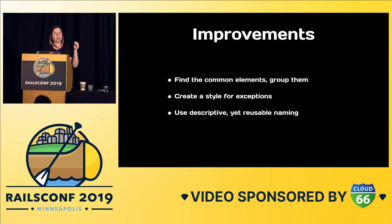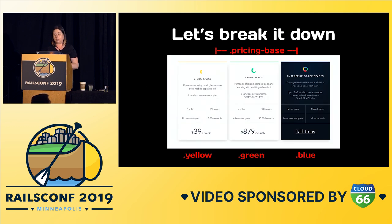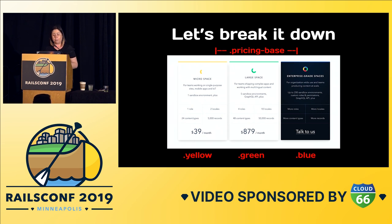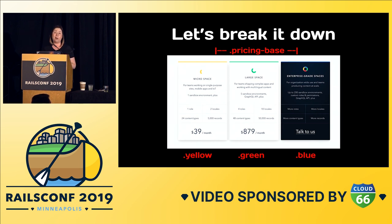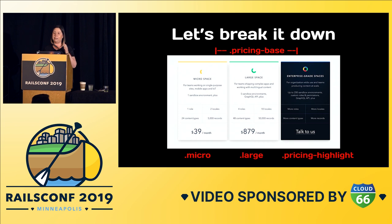How I would approach a pricing table like this is creating a pricing-base class that has all the elements boxes have in common — same width, height, border, border-radius, box-shadow. Then handle exceptions like yellow, green text, and blue background. I'd use something more semantic like 'micro,' 'large,' and 'highlight' rather than color names, because if marketing says that yellow isn't testing well and they want purple, you'd have a class called 'yellow' that you'd have to rename everywhere. But if you named it 'micro,' you just change the color in that one class and you're done.